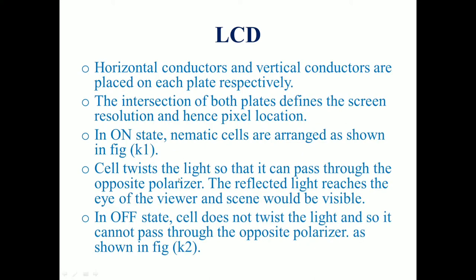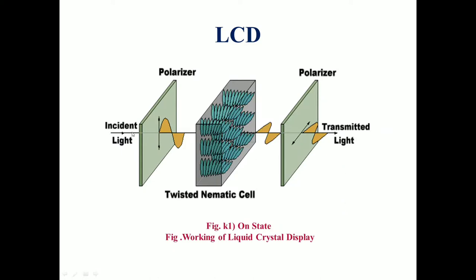In the on state, the nematic cells are arranged twisted. The cell twists the light so that it can pass through the opposite polarizer. The reflected light reaches the eye of the viewer and the scene will be visible.